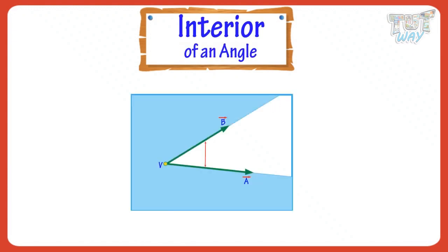The interior is the space between two straight lines. It extends even beyond the ends of the line segments. Here, the white area is the interior of the angle.